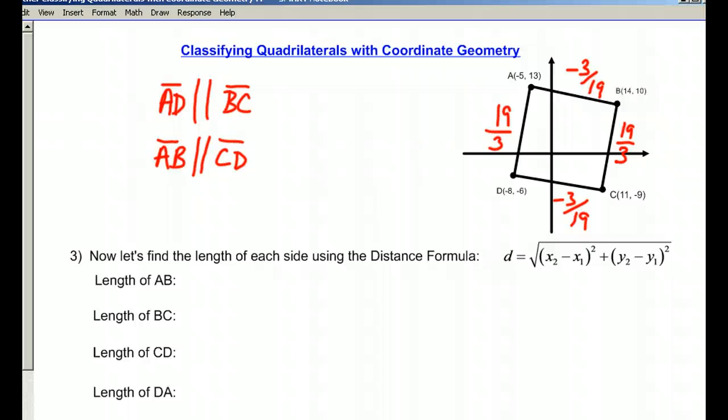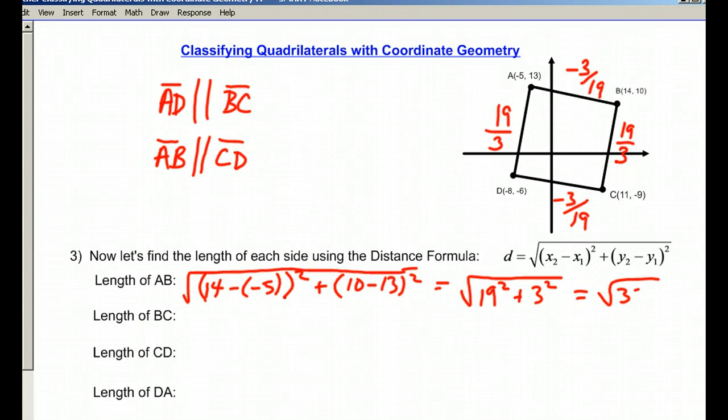So let's go ahead and find the length of every side. The length of AB is going to be the square root of (14 minus negative 5) squared plus (10 minus 13) squared, which ends up equaling the square root of 19 squared plus 3 squared, and that total comes out to be the square root of 370.